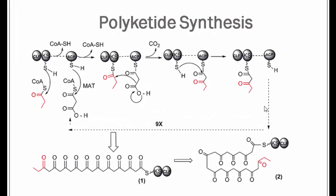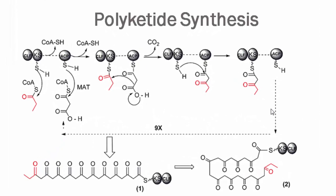The synthesis of Amphotericin B occurs through polyketide synthesis. Doxorubicin, Erythromycin, and Amphotericin B all share a very common synthesis pattern using enzymes such as ketosynthase, acyl carrier proteins, acyl synthases, and acyl transferases — all of which are required to produce the structure.